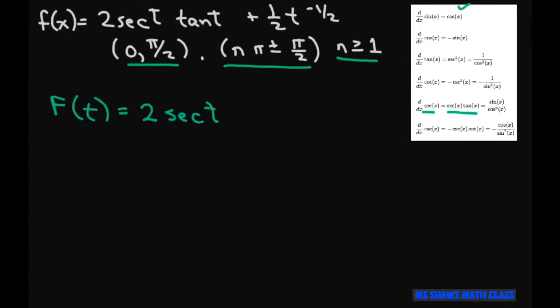And then for this one, you're going to write the 1 half T, then you write negative 1 half plus 1, which is 2 halves, and divide that by 1 half, because this equals 1 half.